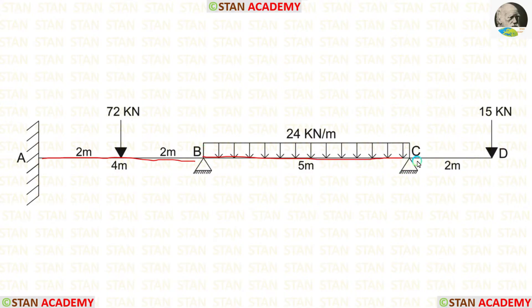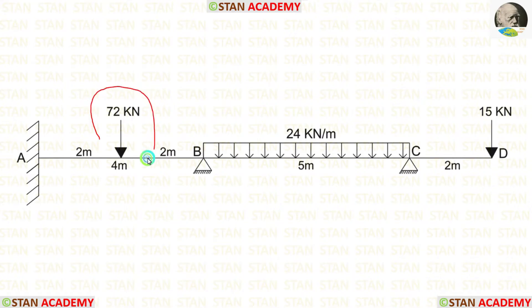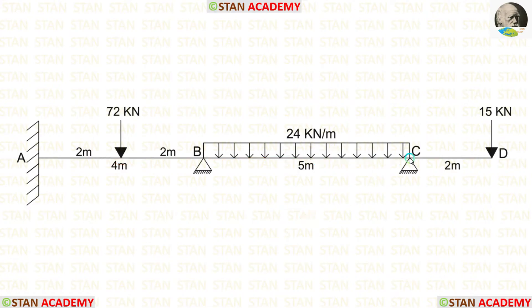There is also an overhanging span CD. In span AB, there is a point load of 72 kN acting at the center. In span BC, there is a uniformly distributed load of 24 kN per meter acting for the full span. In the overhanging span CD, there is a point load of 15 kN acting at point D.